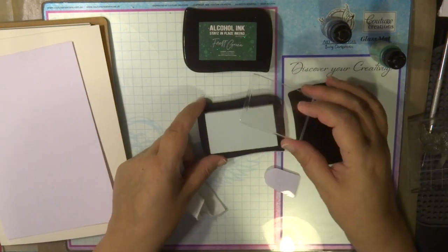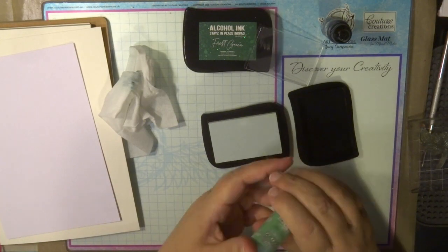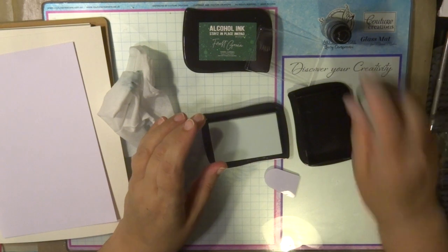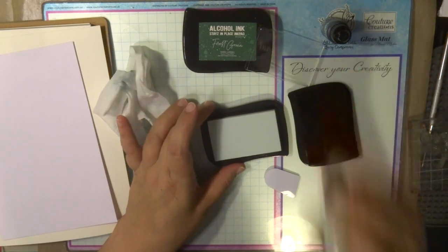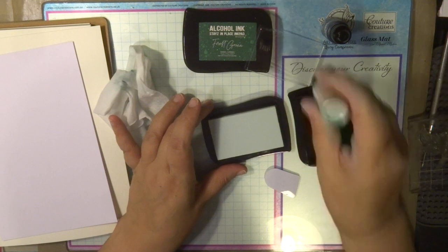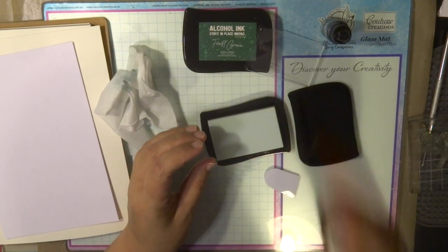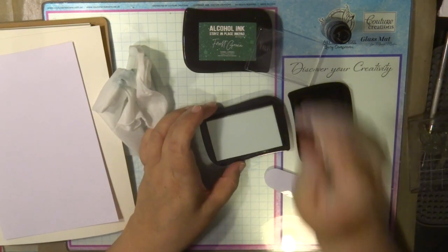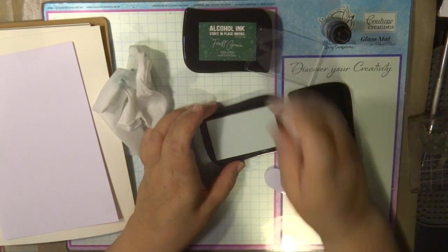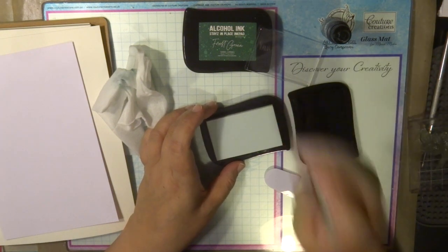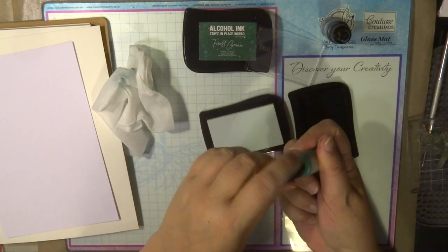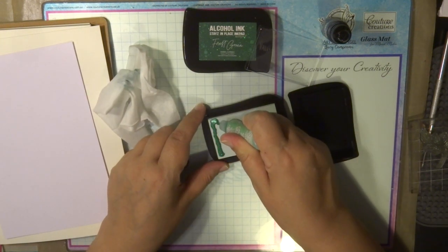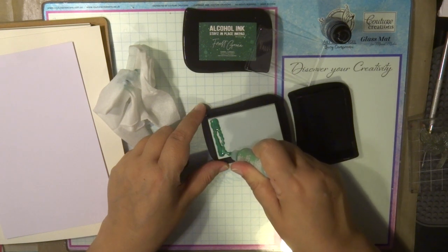This one here is brand new—I've never used this one. The other was forest green stays-in-place ink pad; this one is called mint green. This beautiful pearlized alcohol ink can be used on most surfaces, porous and non-porous. You just have to leave it to dry. If it's porous, it will be absorbed; if it's non-porous, it takes a few minutes to dry.